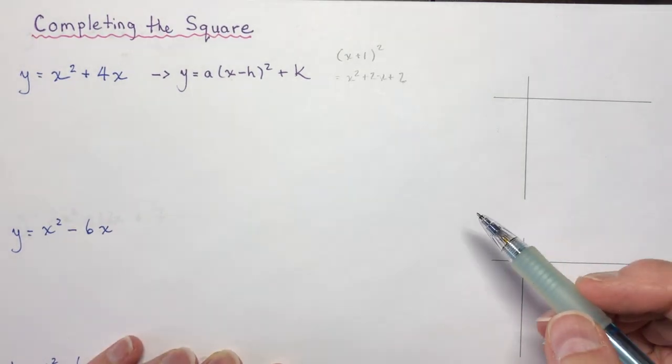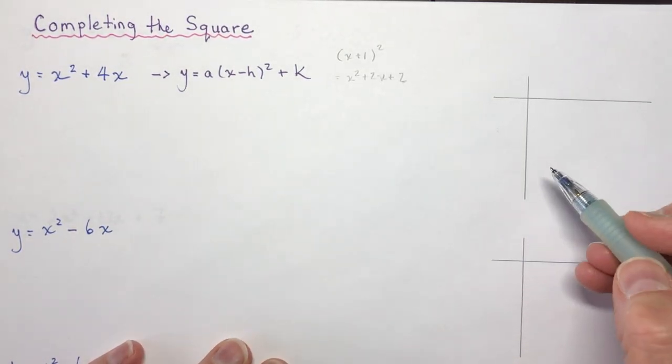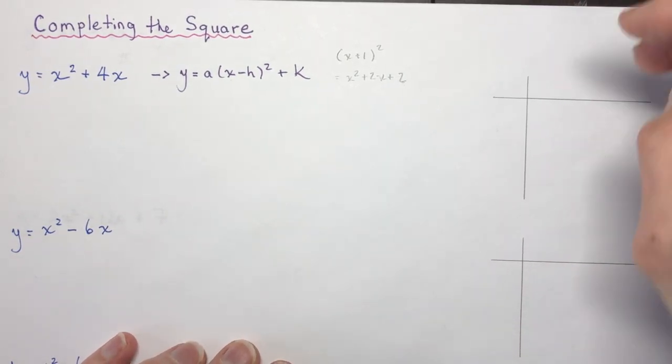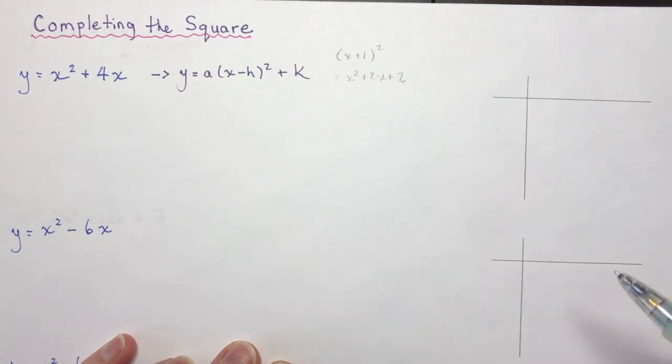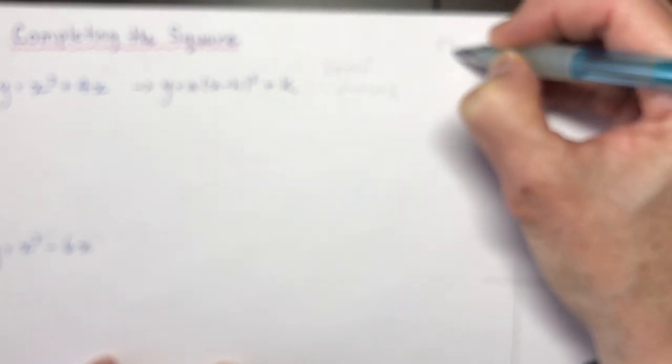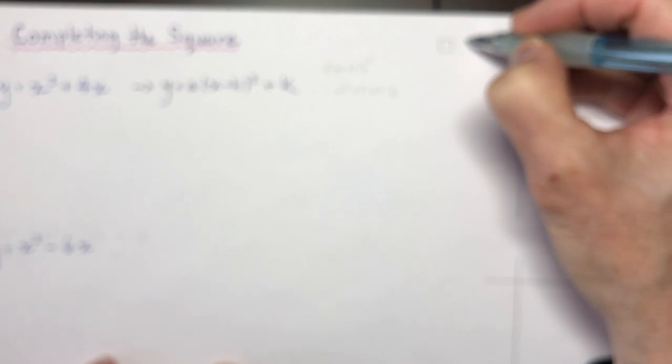So how are we going to do this? I'm not sure if you're familiar with algebra tiles or not, and I'm not a huge fan of them, but certainly for completing the square they make an awful lot of sense. So let's just do a little review on what algebra tiles look like. You had little tiles that were units, longer tiles that we called x's, and square tiles that were your x squared tiles.